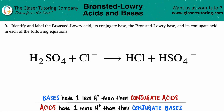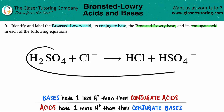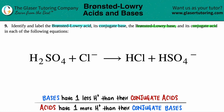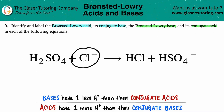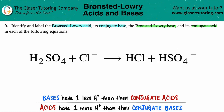Number nine: identify and label the Brønsted-Lowry acid, its conjugate base, and the Brønsted-Lowry base and its conjugate acid in each of the following equations. And then we have this equation right here. So we have to find out these four things — the Brønsted-Lowry acid and base and the conjugate acid and base — of H₂SO₄ plus Cl⁻ yields HCl plus HSO₄⁻. The easiest thing to do here is to first pick out the pairs.